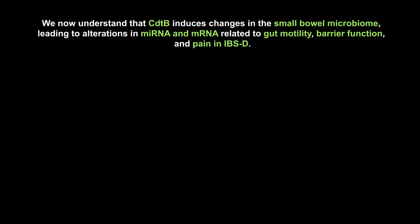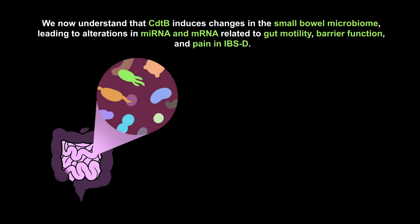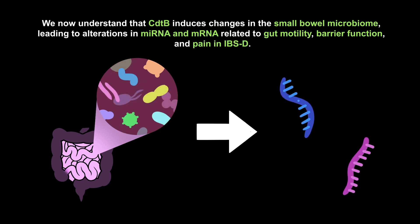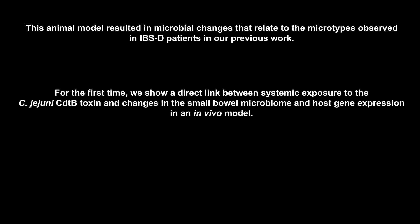We now understand that CDTB induces changes in the small bowel microbiome, leading to alterations in microRNA and mRNA related to gut motility, barrier function, and pain in IBS-D. This animal model resulted in microbial changes that relate to the microtypes observed in IBS-D patients in our previous work. For the first time, we show a direct link between systemic exposure to CDTB toxin and changes in the small bowel microbiome and host gene expression in an in vivo model.